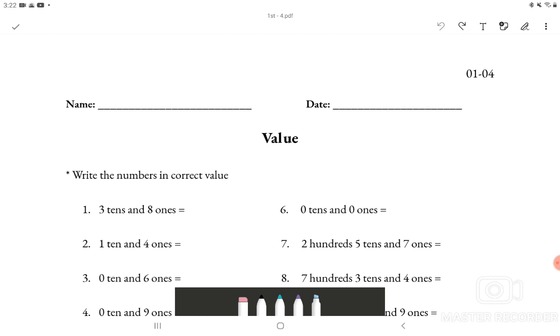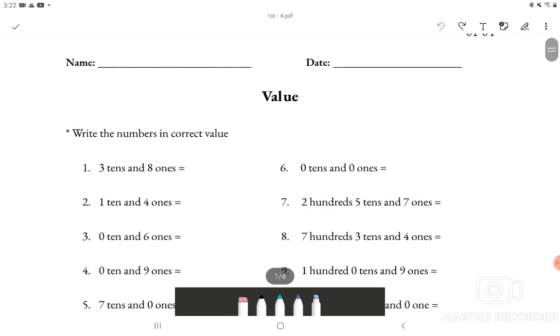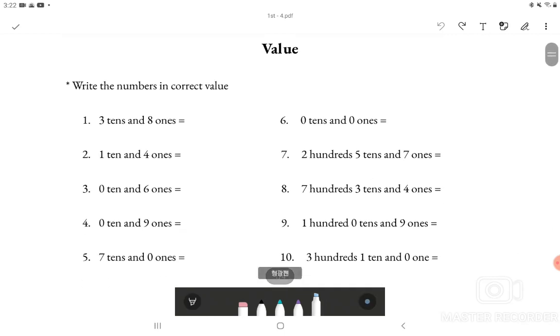The first section is about value and below that it says write the numbers in correct value. So looking at number 1 it says 3 tens and 8 ones. And what we have to do is write them in number form which is standard form. So 3 tens meaning that it's 30 and 8 ones means 8. So we will basically have to add them together which would lead to 38.